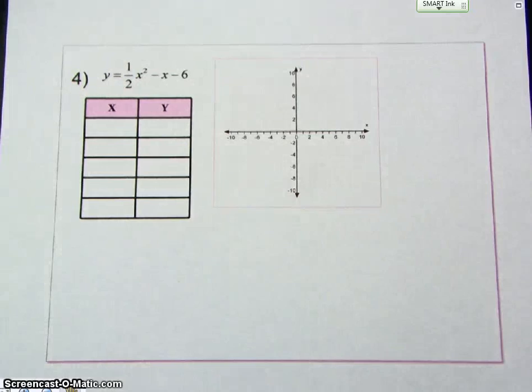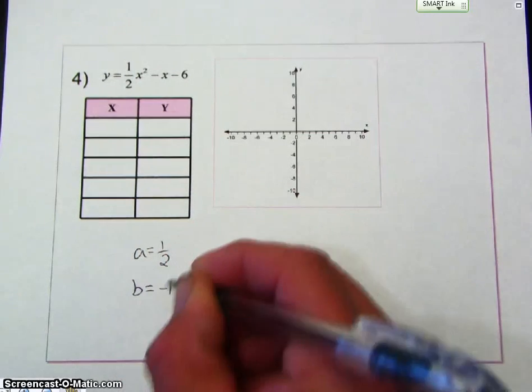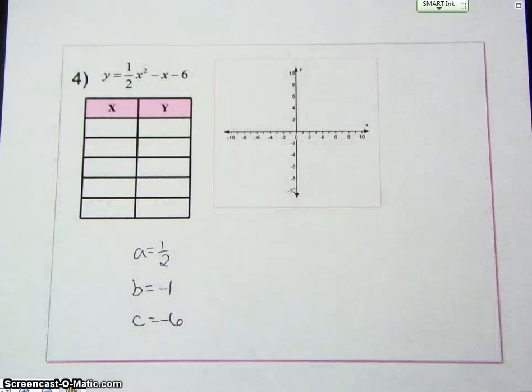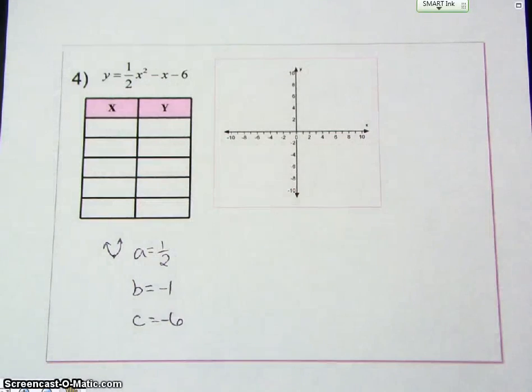So here, a is 1 half, B is negative 1, C is negative 6. It's positive. So I know it opens up. So my vertex will be the lowest point.